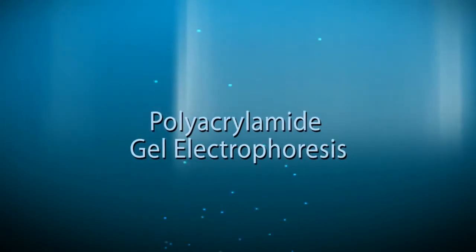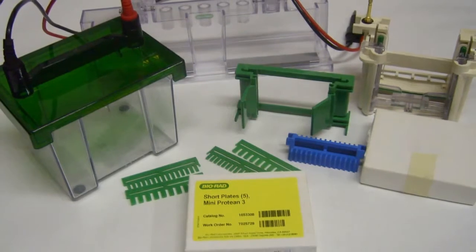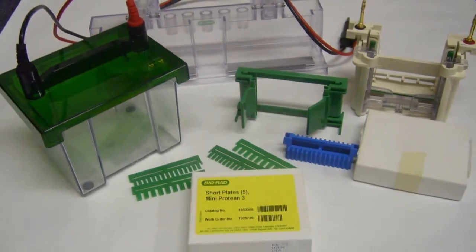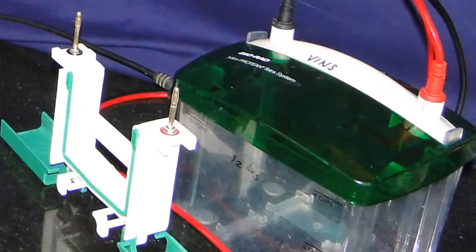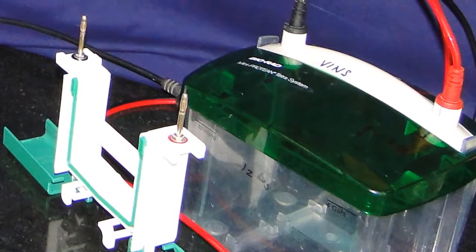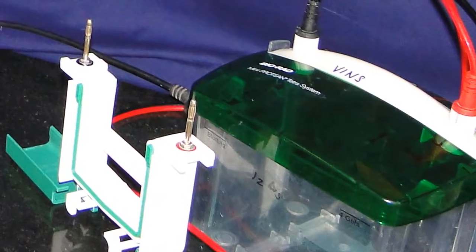Polyacrylamide Gel Electrophoresis. PAGE, or polyacrylamide gel electrophoresis, is a most widely used analytical method to resolve separate components of a protein mixture based on size.